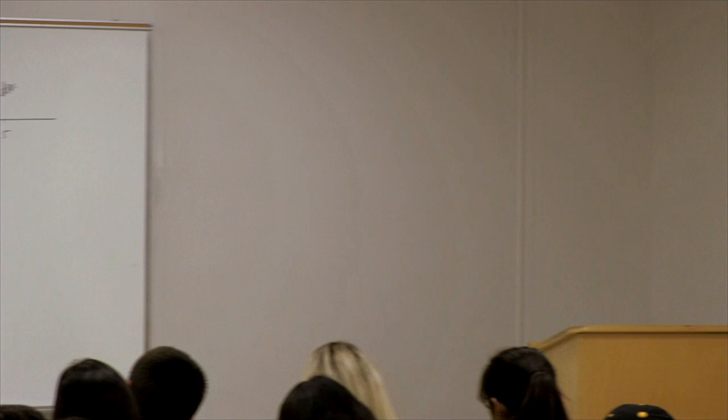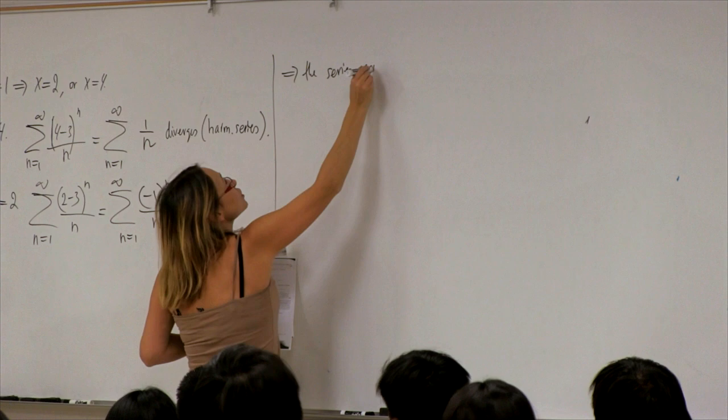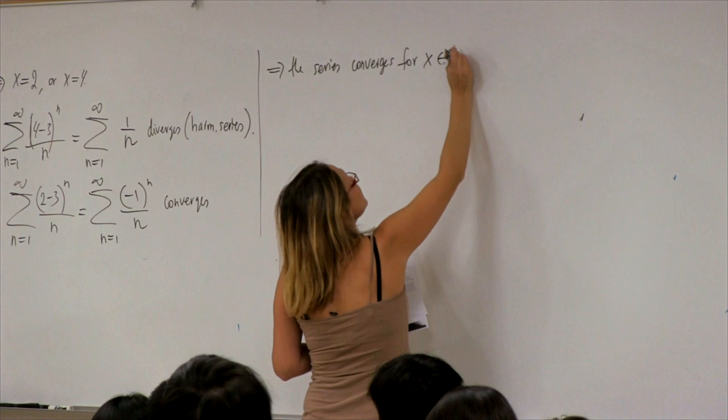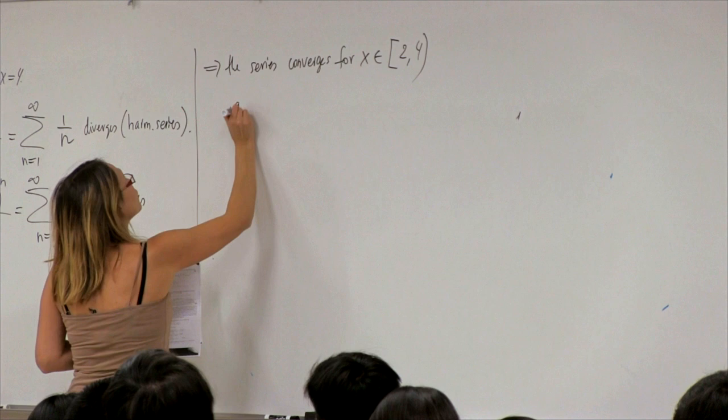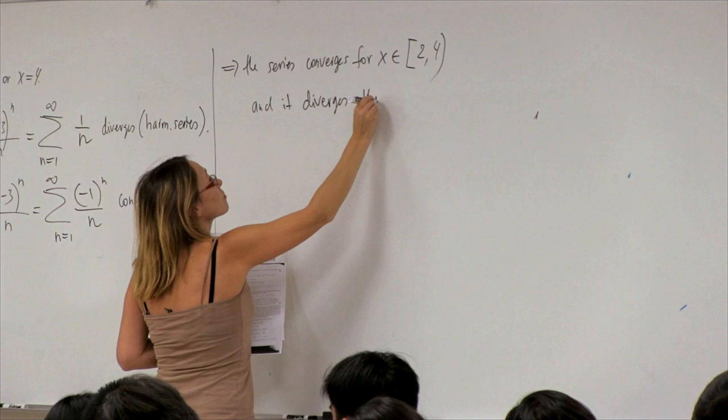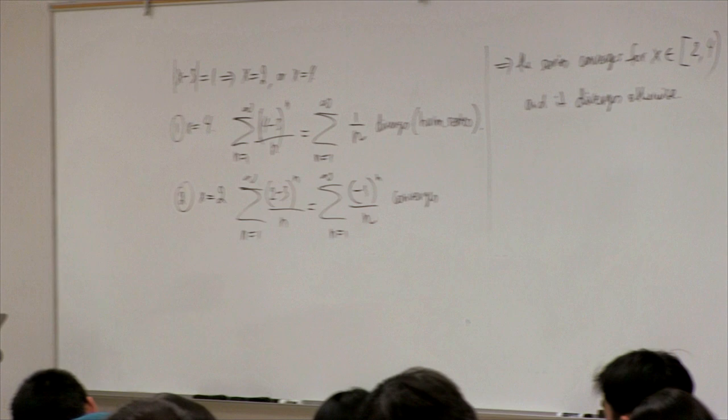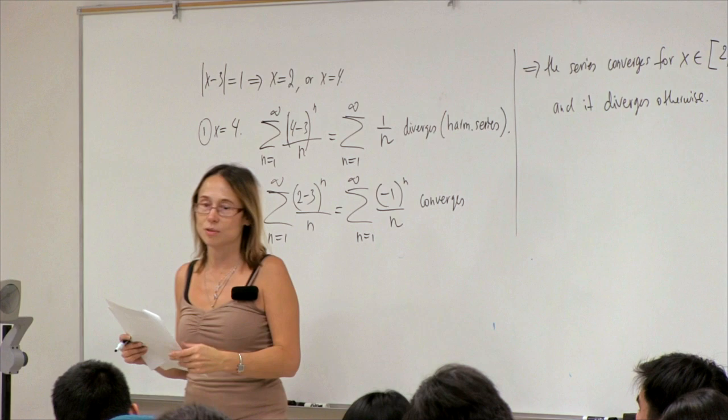The conclusion: the series converges for x belonging to the interval from 2 to 4, not inclusive on the right — so [2, 4) — and diverges otherwise. This will be our usual routine: use the ratio or root test, then check the boundary points by hand since those give L=1.